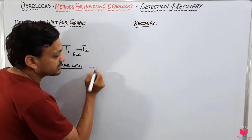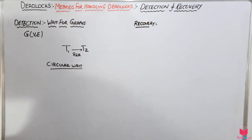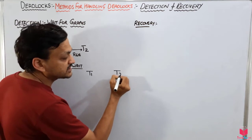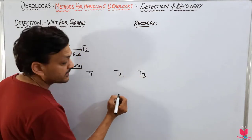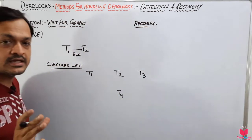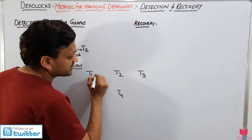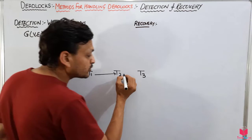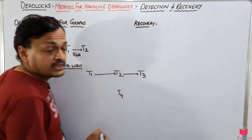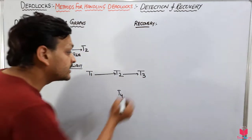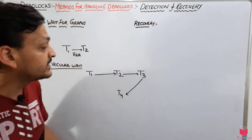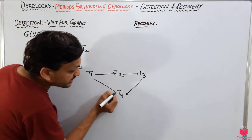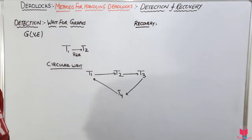Let's suppose we have four transactions: T1, T2, T3, and T4. T1 is requesting T2 to release its resources, T2 is requesting T3 to release its resources, and T3 is requesting T4 to release its resources.